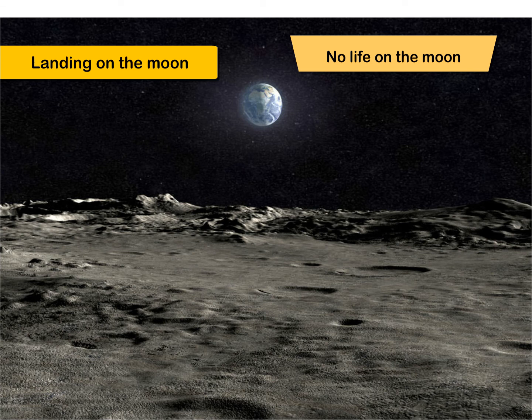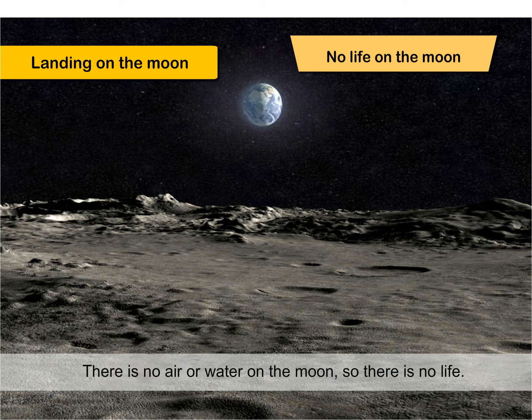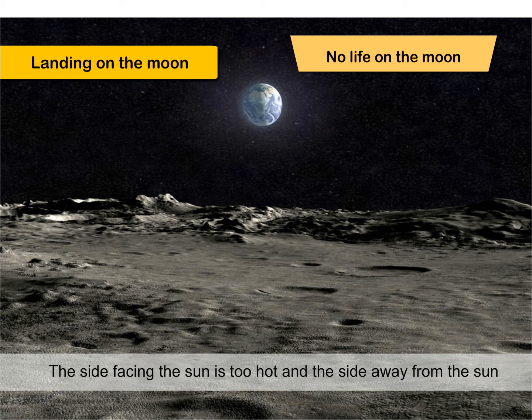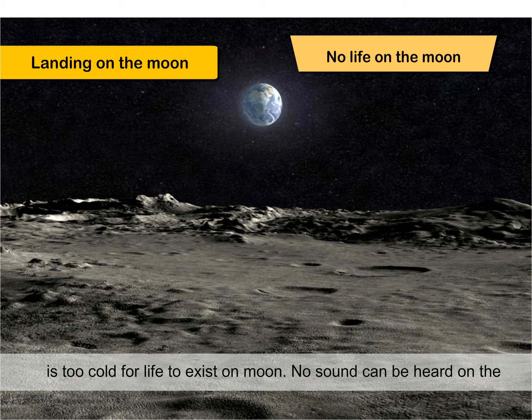No life on the moon. There is no air or water on the moon, so there is no life. The side facing the sun is too hot, and the side away from the sun is too cold for life to exist on moon. No sound can be heard on the moon, as there is no air.